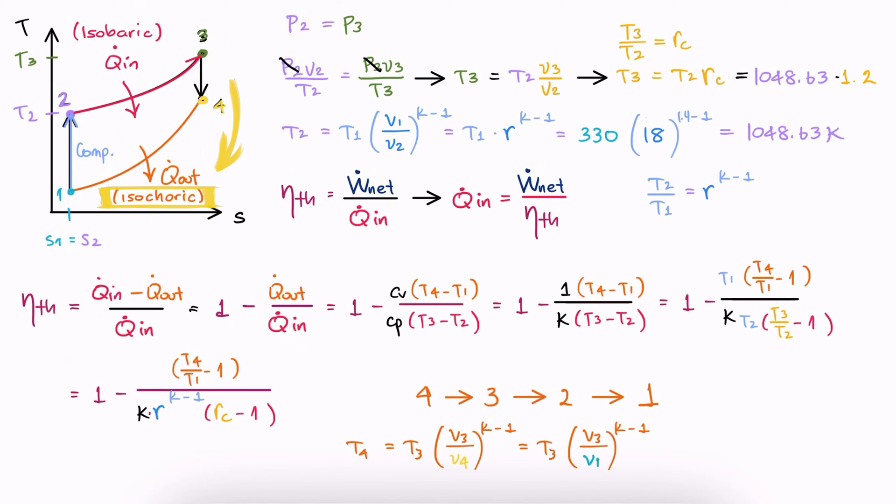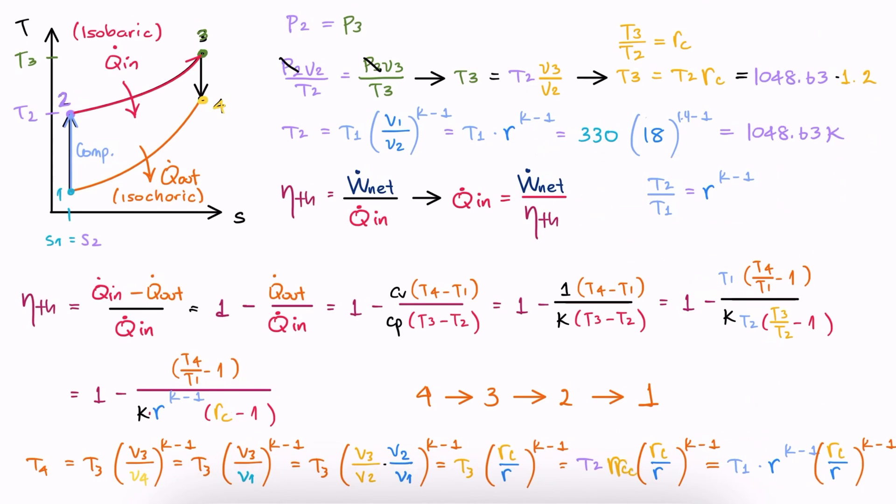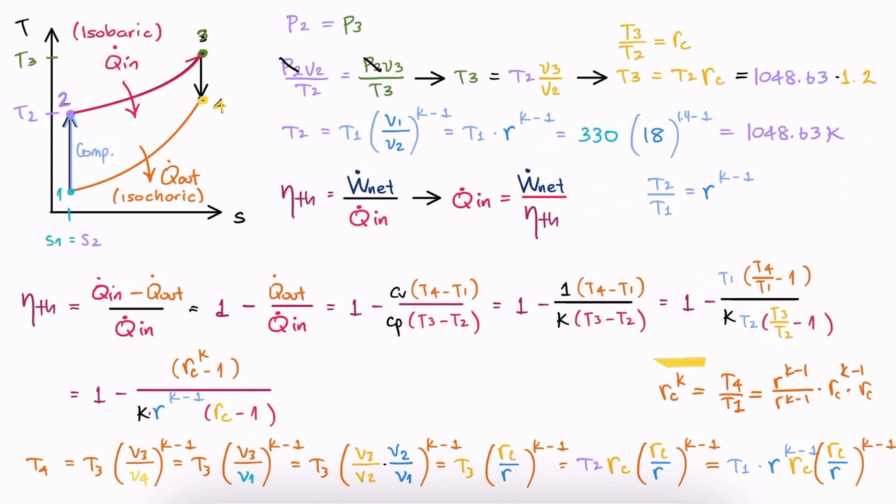V1 and V4 are the same. V3 over V1 can be expressed as V3 over V2 times V2 over V1, which we do because one is the cutoff ratio and the other the compression ratio. And again, we already have an expression for T3 in terms of T2 and an expression for T2 in terms of T1. This gives us an expression for T4 over T1.